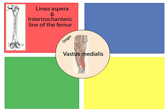The vastus medialis also originates on the intertrochanteric line, located on the proximal end of the anterior aspect of the femur.